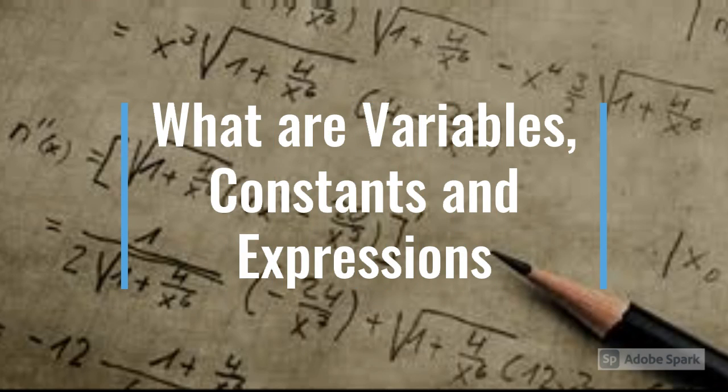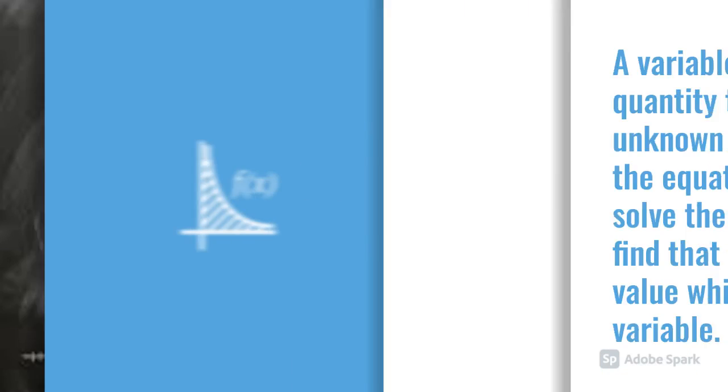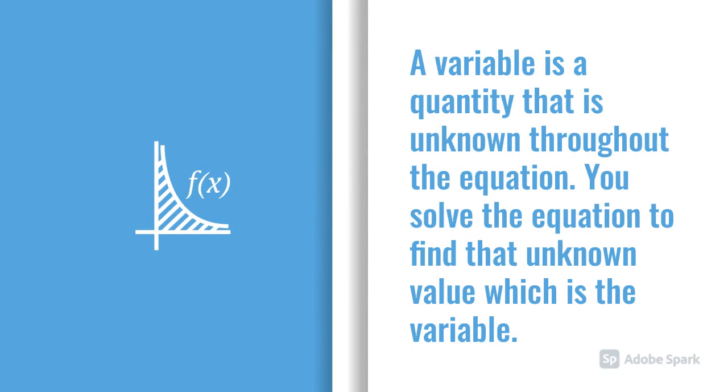What are variables, constants and expressions? What are variables? A variable is a quantity that is unknown throughout the equation. You solve the equation to find that unknown value which is the variable.